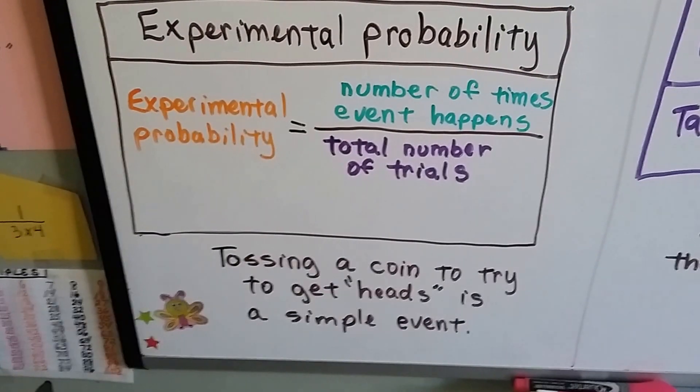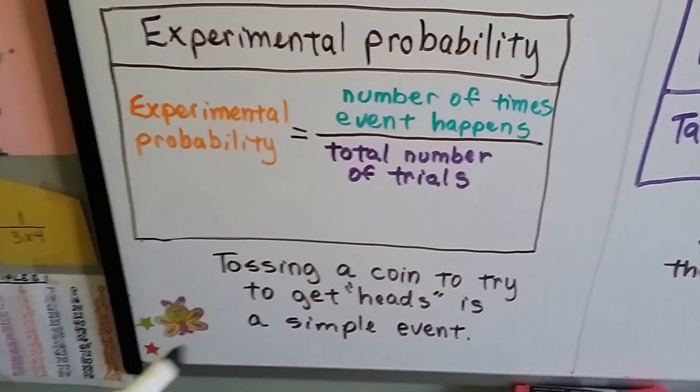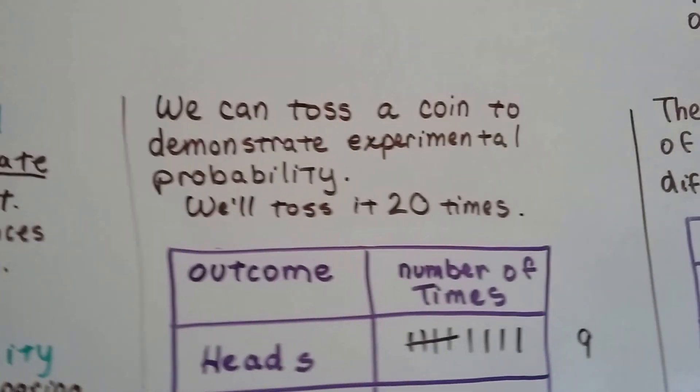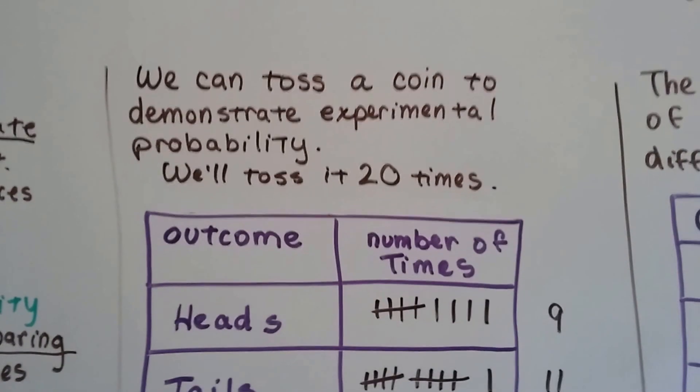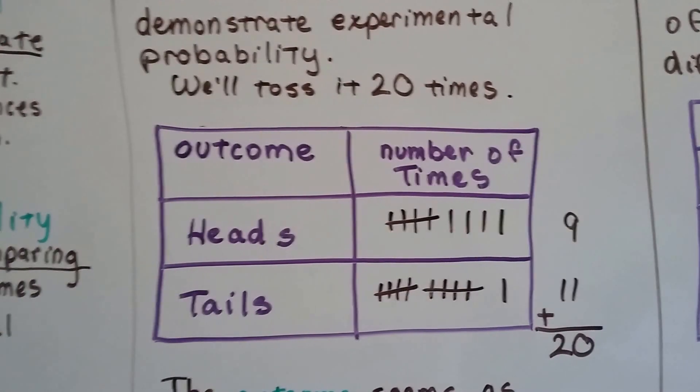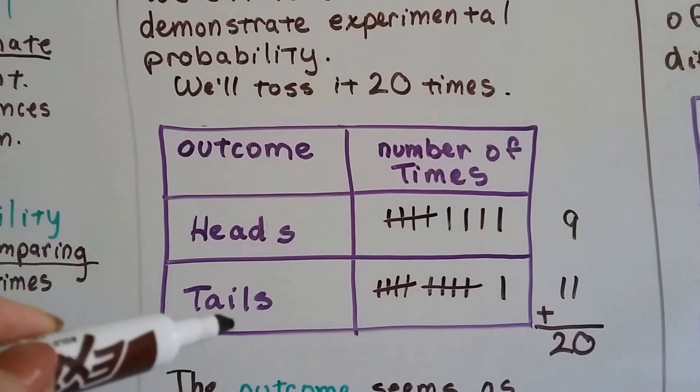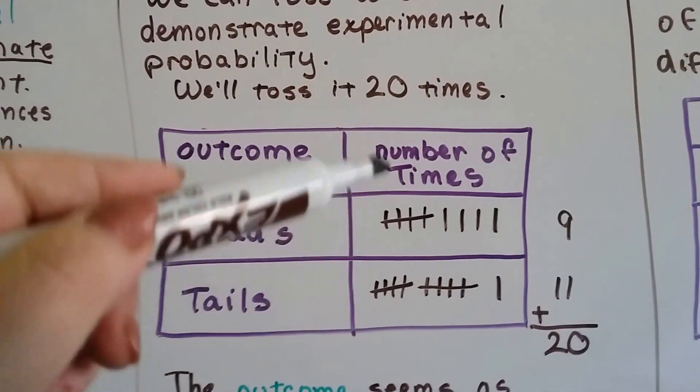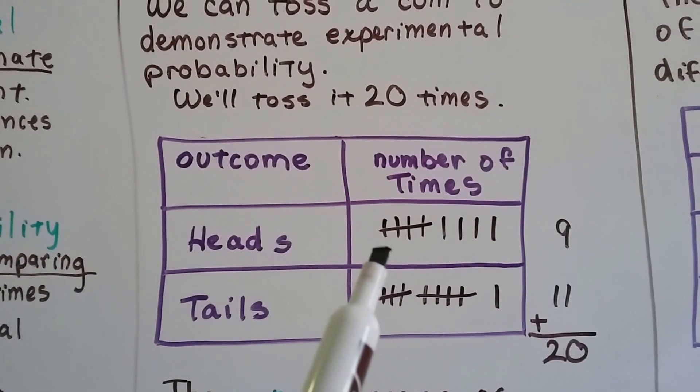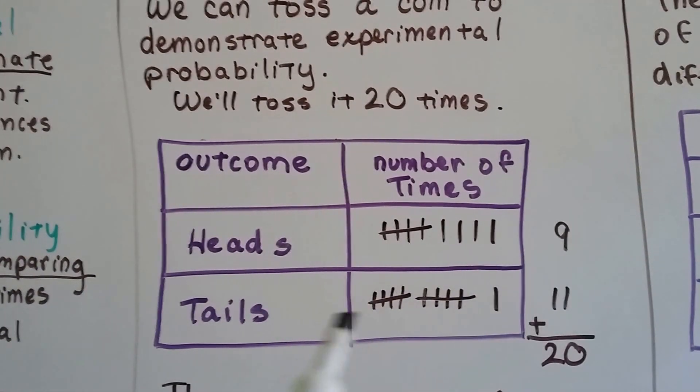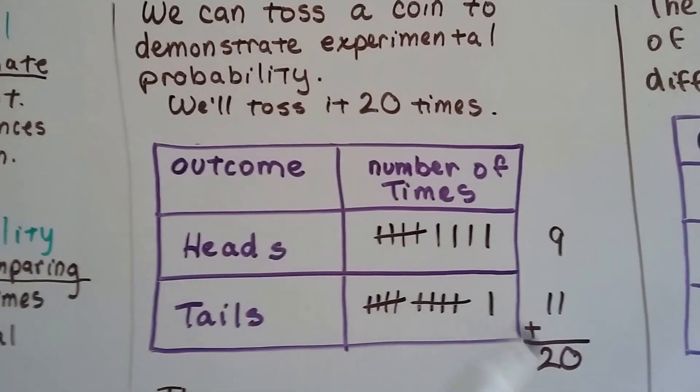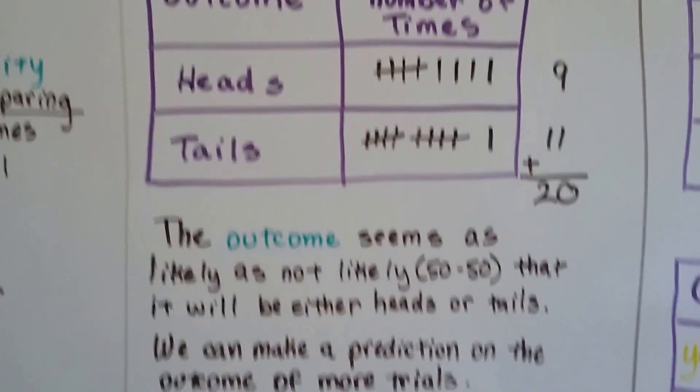So tossing a coin to try to get heads would be a simple event. We can toss a coin to demonstrate experimental probability. We'll toss it 20 times. And the outcome is either heads or tails. And the number of times I flipped it is on this side. I got heads 9 times and tails 11 times. The 9 plus 11 is 20. That was the 20 times I flipped it.